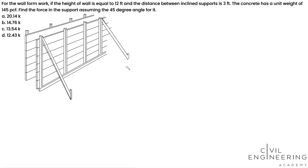All right, so this question says, for the wall form work, if the height of the wall is equal to 12 feet and the distance between the inclined support is 3 feet, and we're pouring concrete with a unit weight of 145 PCF.